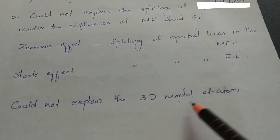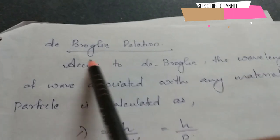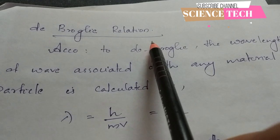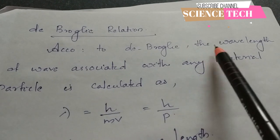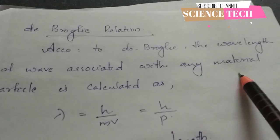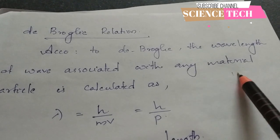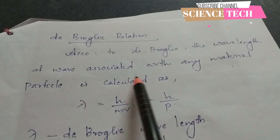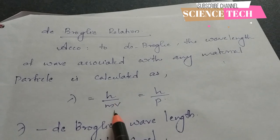The Bohr model also could not explain the three-dimensional model of the atom. The De Broglie relation gives the wavelength associated with any material particle, calculated as lambda equals h divided by mv.